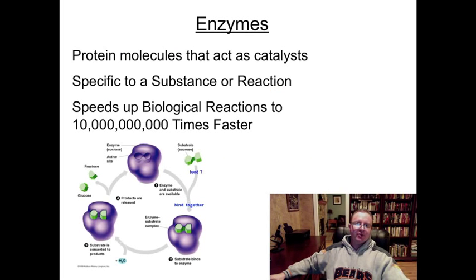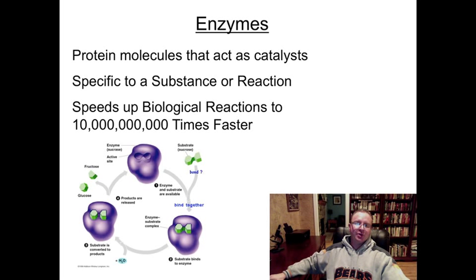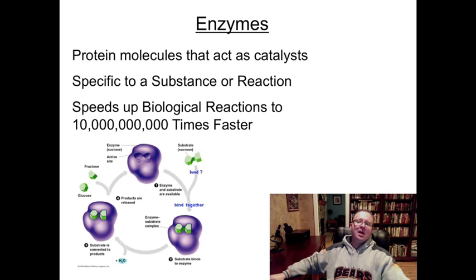Our first main idea for this screencast is enzymes. At the end of the last screencast, Mr. Workman talked about how the rate of reactions can be increased by using something called a catalyst. Catalysts will increase the rate of reaction by reducing the amount of activation energy required to make the reaction work. Enzymes are special biological catalysts — they are protein molecules that serve as catalysts in cells.